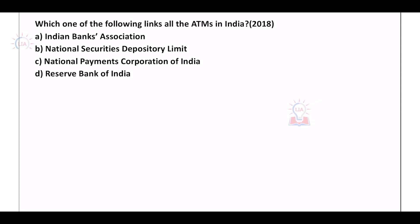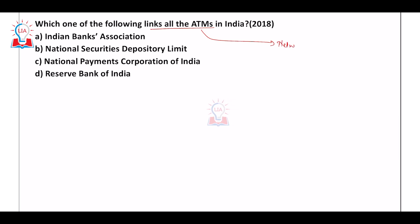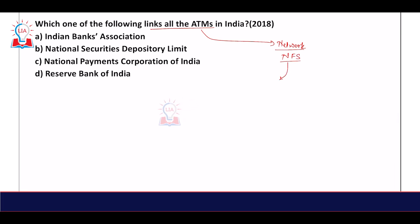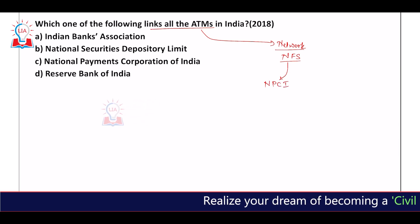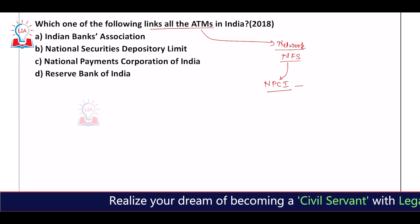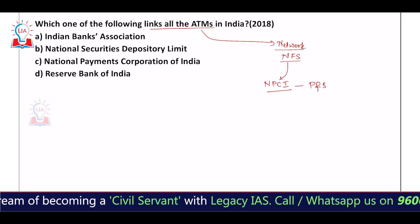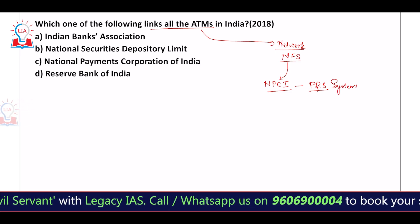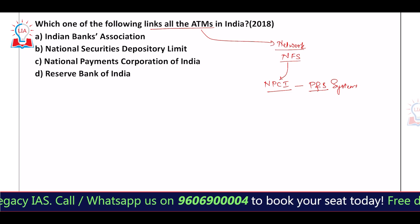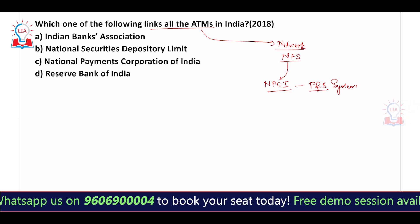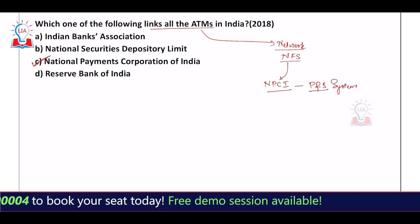The first question asks: which one of the following links all the ATMs in India? The answer is a network called NFS — the National Financial Switch. This service is provided by an organization called NPCI, the National Payments Corporation of India, which is an umbrella organization for operating all retail payment and settlement systems in India. So ultimately, NPCI is responsible for linking all ATMs in India.